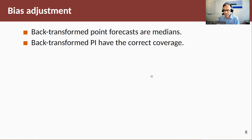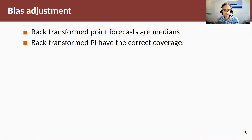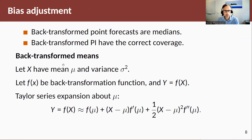It is worth understanding a little bit how we make this bias adjustment. To recap: back-transformed point forecasts are medians. If we need the means, we need to do something more. Back-transformed prediction intervals have the correct coverage — so any quantile maps nicely back-transformed. Now, what do we do about back-transformed means?